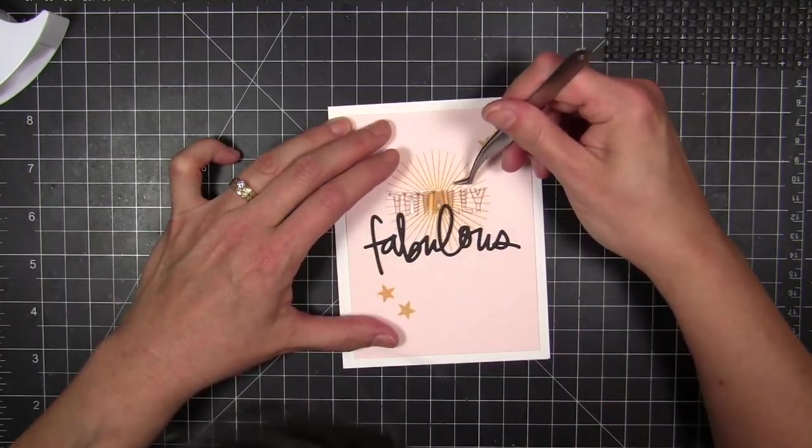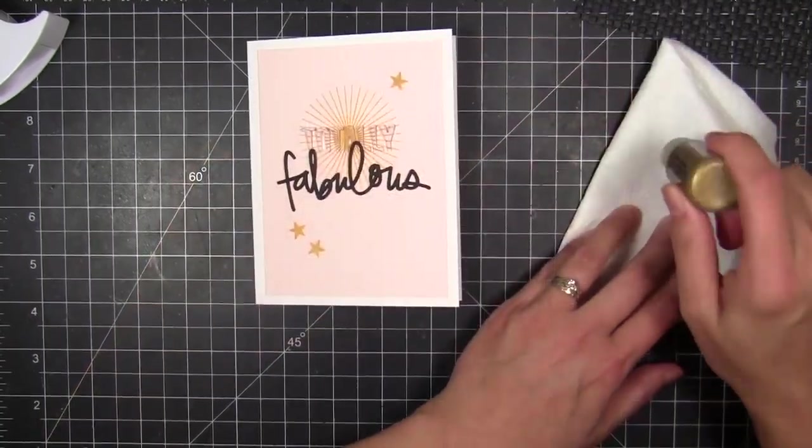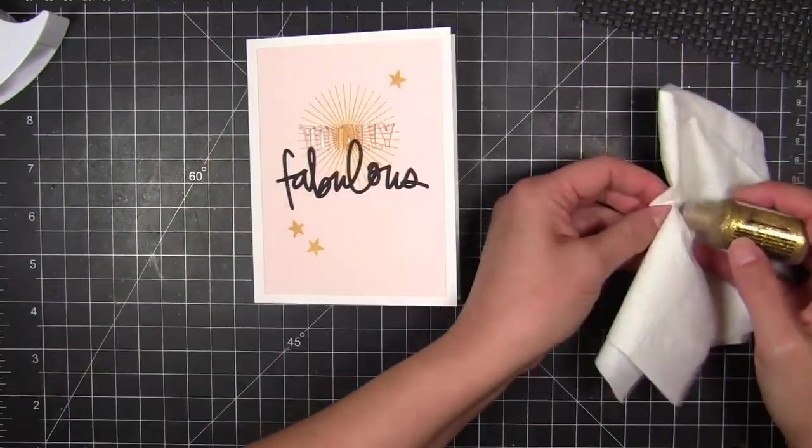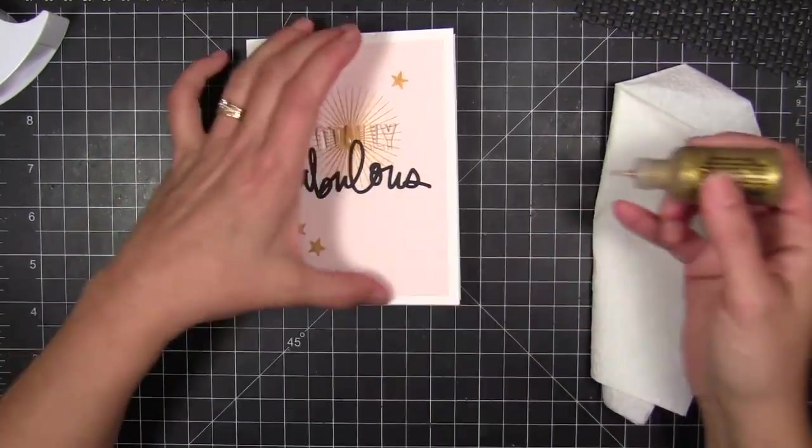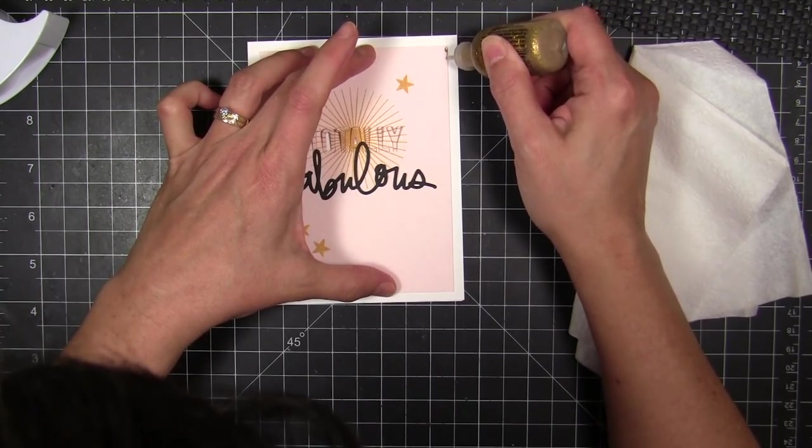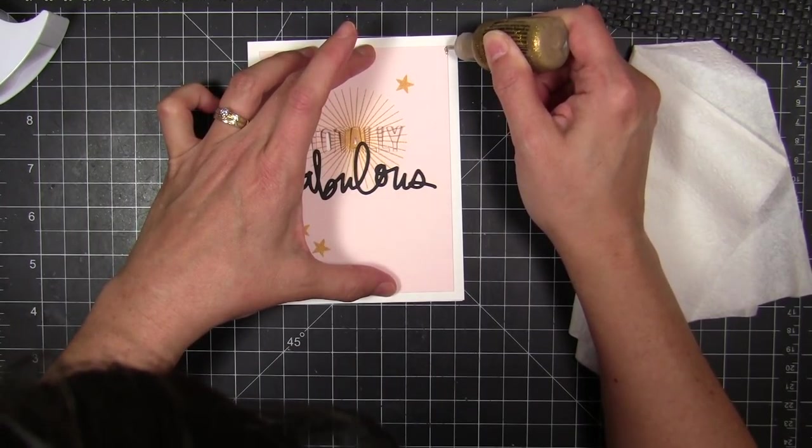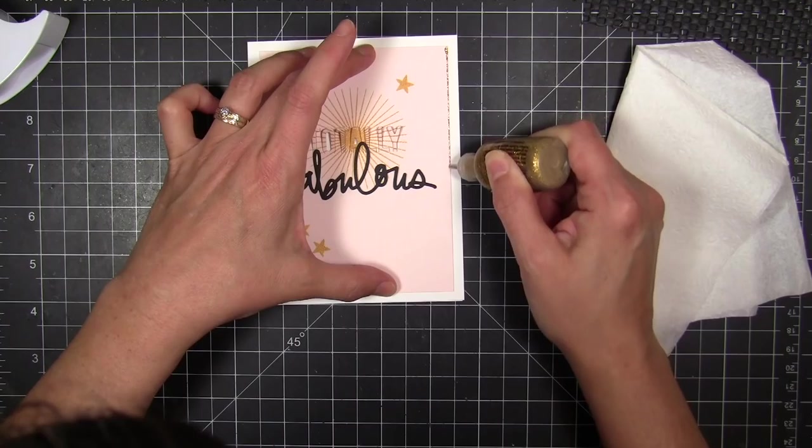So now one last finishing touch. I'm going to take some goldenrod stickles and I tap that against my work surface there to make sure all the glitter glue was down at the nozzle tip and made sure the tip was very clean, wiped it off.